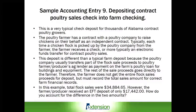Therefore, the farmer does not receive the entire flock sales proceeds for deposit, but must record the total sales amount for correct financial records. In this example, total flock sales were $34,884.65. However, the farmer receives an EFT deposit of only $17,442. How do you account for the difference in these two amounts? We'll review that shortly, but now let's switch over to the Excel view.